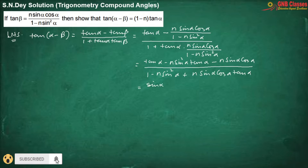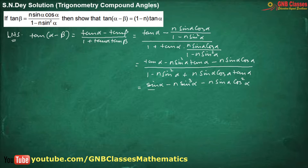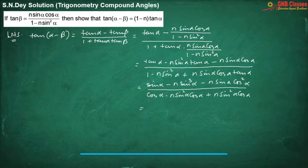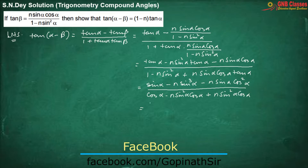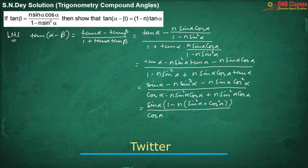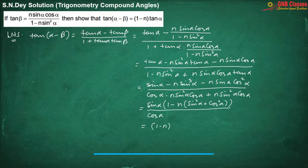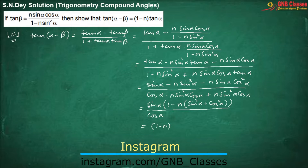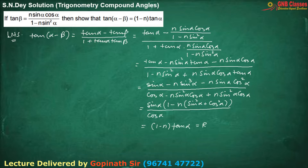Taking sin alpha common from the numerator, and in the denominator we are having only cos alpha. We are left with 1 minus n, because sin squared alpha plus cos squared alpha equals 1, into tan alpha. That is exactly your right hand side. Have you understood it? Okay, move for the next problem.